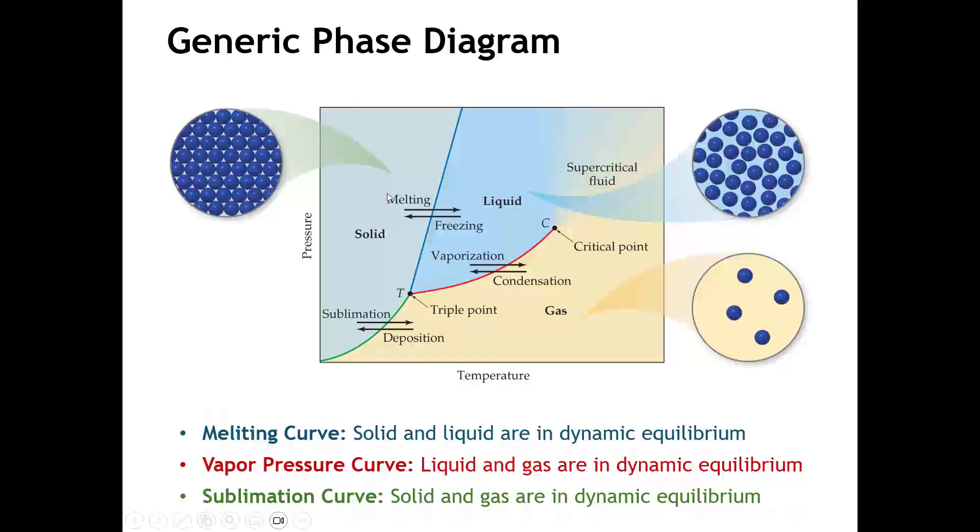What a phase diagram is telling us is that for a given temperature and pressure, we can have a variety of scenarios. At any place on the phase diagram where we're not either on a line or a point, we just have one phase of matter being stable. But on these lines, let's look at this blue line here, which is called the melting curve.